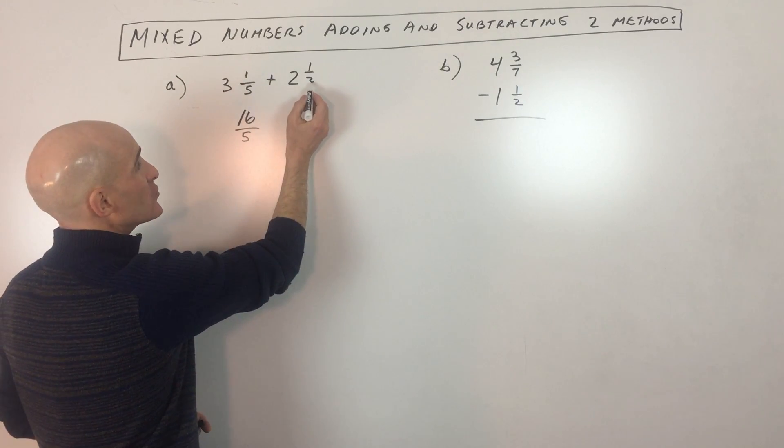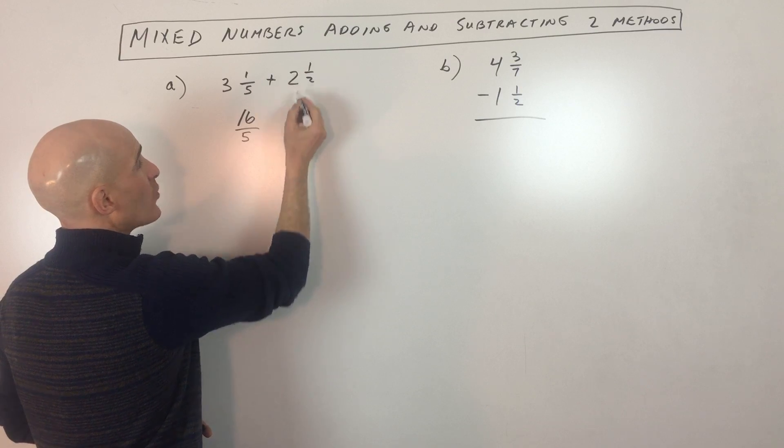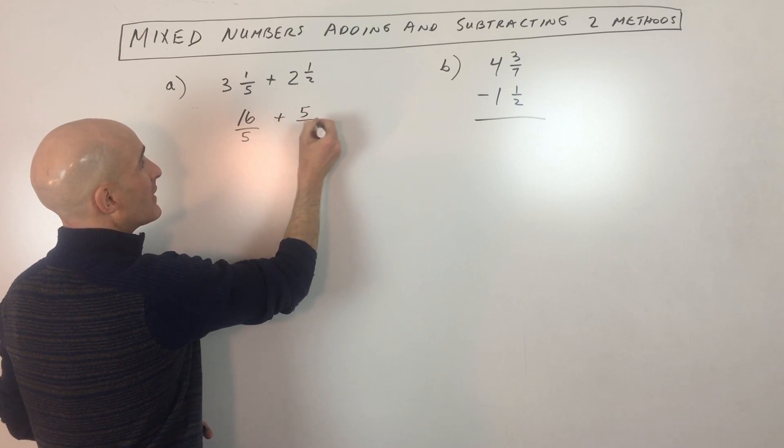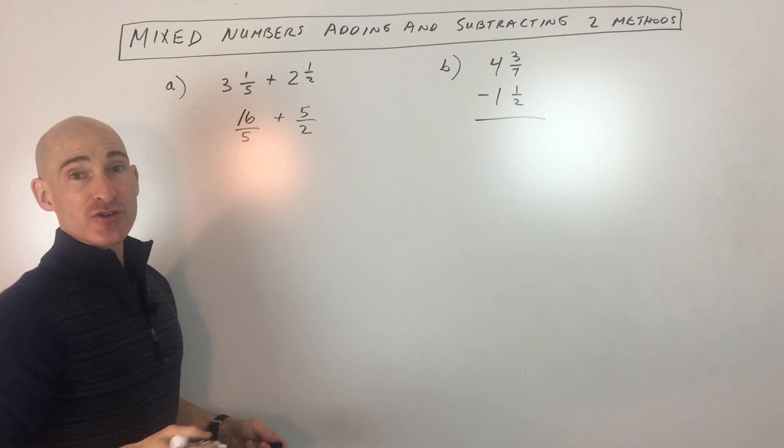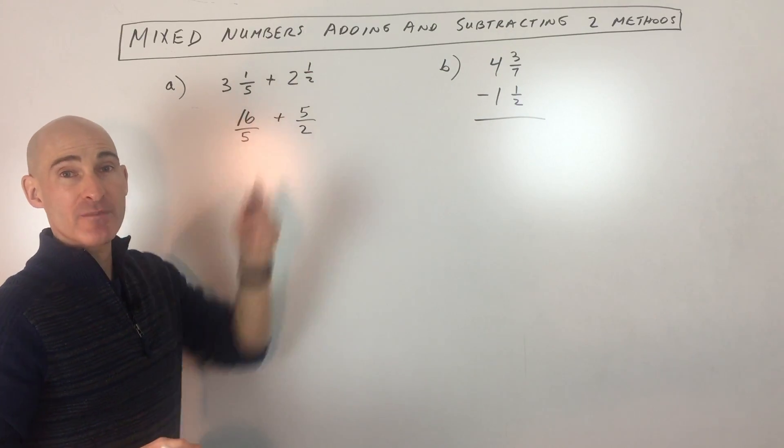Same thing with this one. We're going to do two times two is four plus one is five. And it's all divided by that denominator two. Again, you can double check by converting it back into a mixed number.